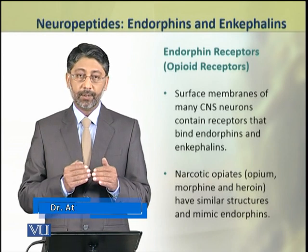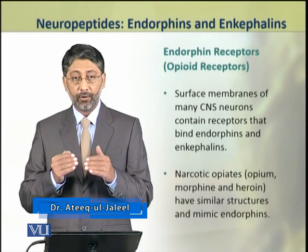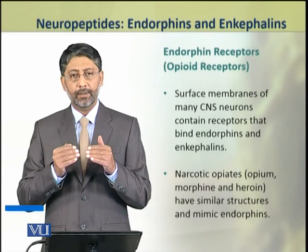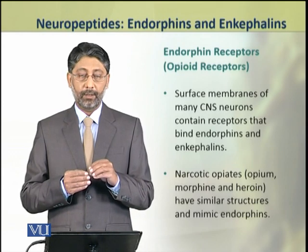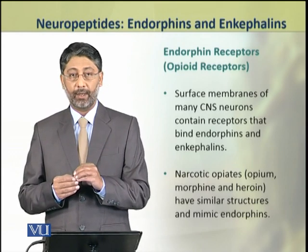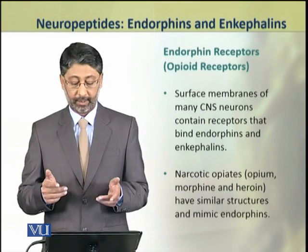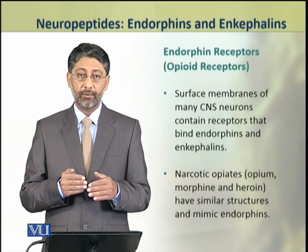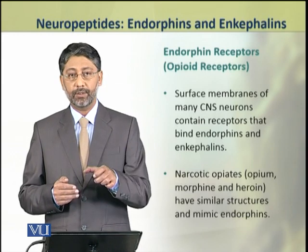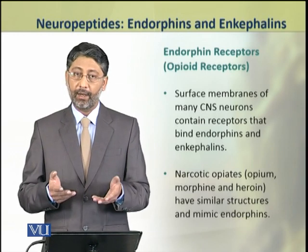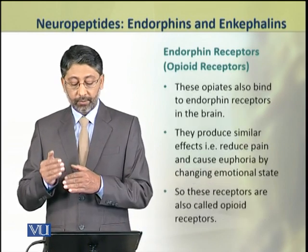In the central nervous system, neurons in many cells have receptors for endorphins and enkephalins. These receptors are also bound by narcotic opiates such as morphine, heroin and opium. Because these molecules have similar structures and they mimic the endogenous endorphins and enkephalins, so they produce similar effects.